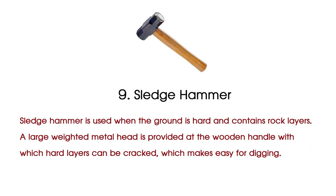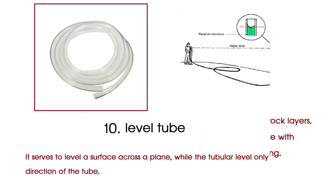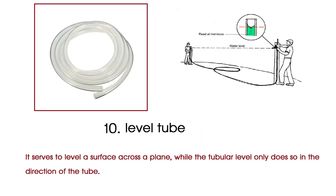Sledgehammer is used when the ground is hard and contains rock layers. A large weighted metal head is provided at the wooden handle, with which hard layers can be cracked, making it easy for digging. Level tube serves to level a surface across a plane, while the tubular level only does so in the direction of the tube.